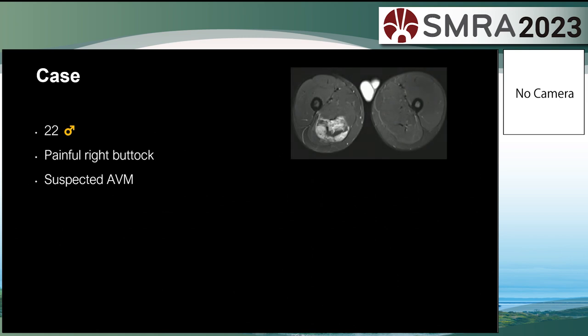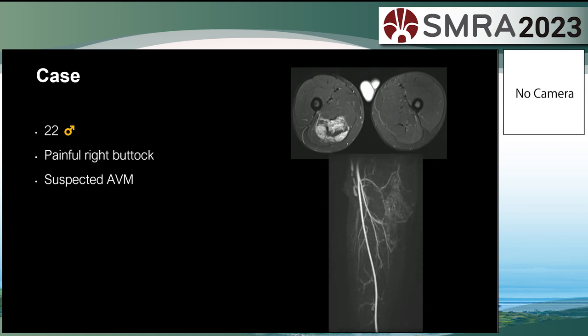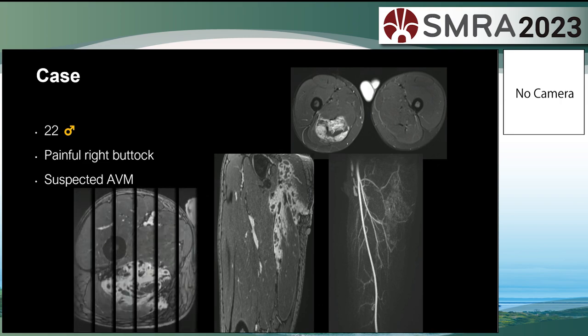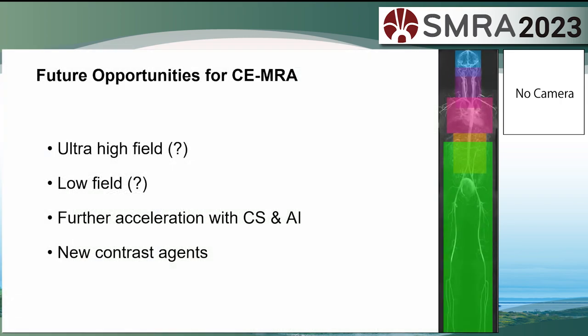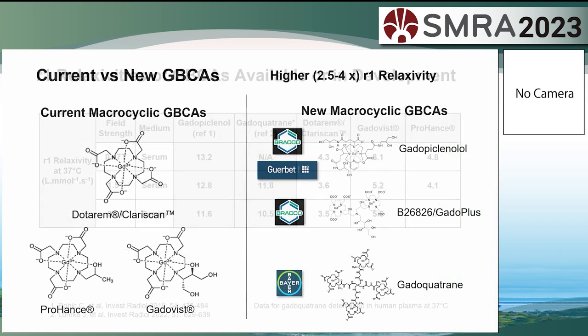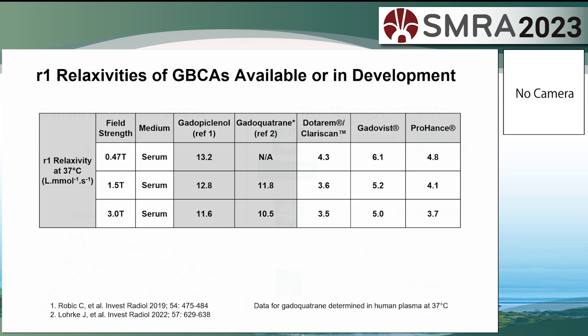Another area where MRA will be useful is arteriovenous malformations, where CT will not tell us everything we need. There are also new contrast agents on the way — new macrocyclic agents with increased relaxivity.